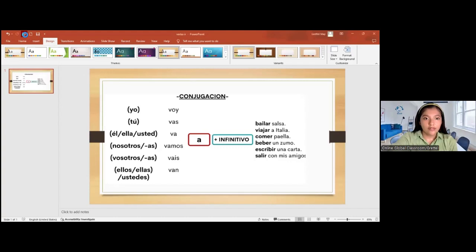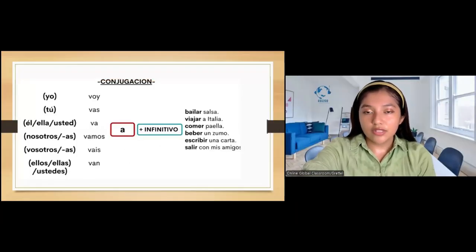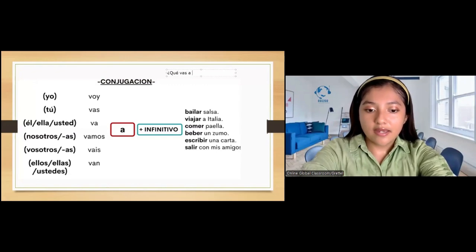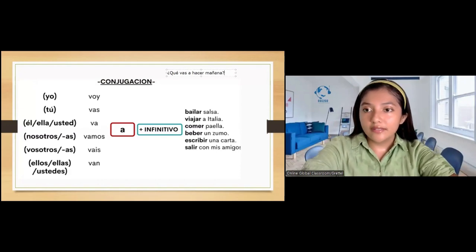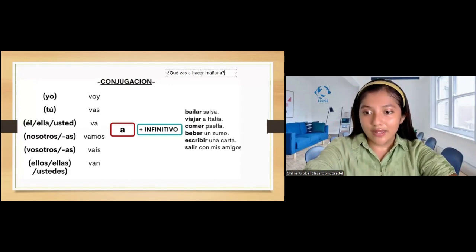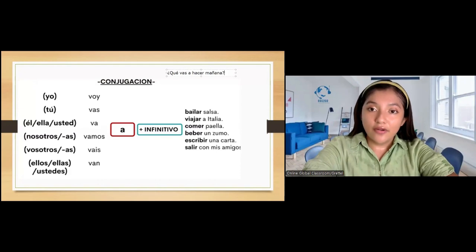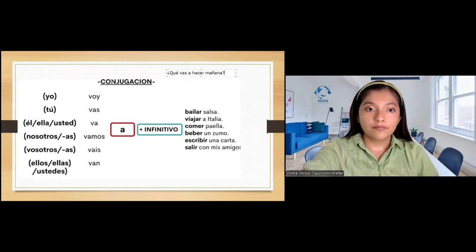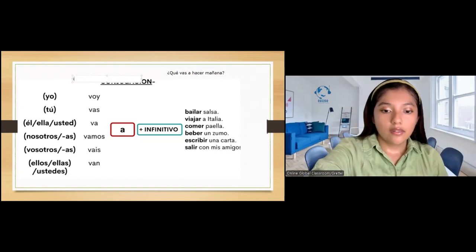Permítanme compartir la pantalla y podemos empezar la clase. ¿Ok? Sí. Muy bien. Entonces... Perfecto. Hoy vamos a aprender el verbo ir. Go. ¿Ok? So the question that I made was, ¿qué vas a hacer mañana? It means, what are you going to do tomorrow? En español, para responder esta pregunta, necesitamos utilizar el verbo ir. We need to use the verb ir.